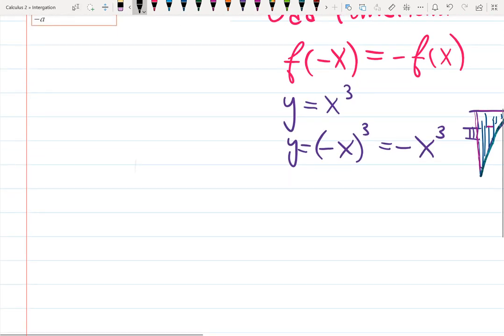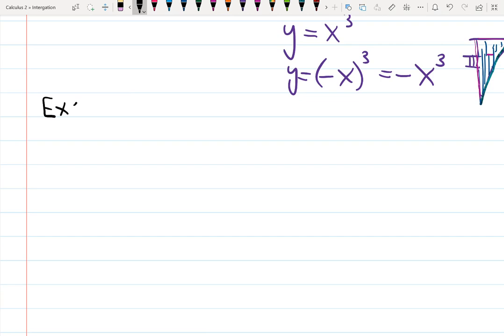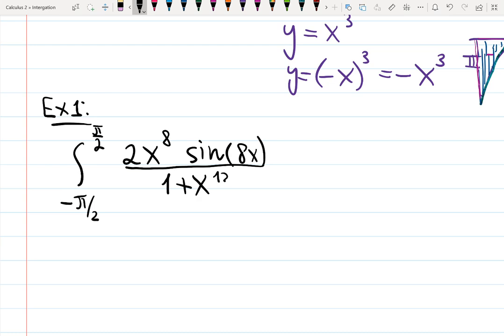Examples. I have an example from a student that posted this nice example in the forum I have. And it looks scary. When you just start working with this example, integral from negative pi over 2 to pi over 2, and it has 2x raised to the 8th power, then it has sine, and it's not just sine x, it's sine 8x, then it's all over 1 plus x to the 12th power dx.